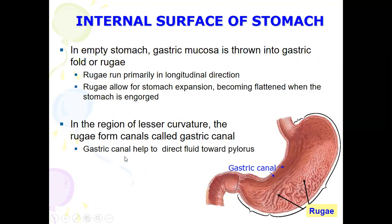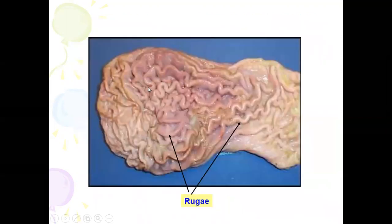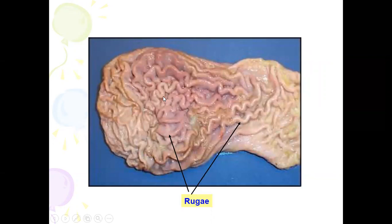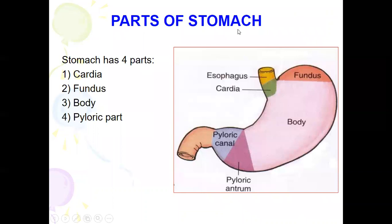The function of the gastric canal is to help direct food toward the pylorus. The gastric canal is formed by the rugae at the lesser curvature. The importance of the rugae is to allow the stomach to expand whenever it is full with food. Now the stomach has four parts.